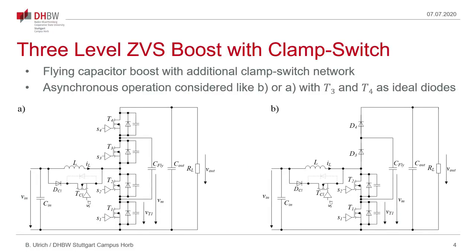The converter considered here is shown on this slide in two versions. On the left side we have a flying capacitor converter with four active switches and on the right side we have a converter where the two upper switches are replaced by diodes. For the presentation here we consider the operating mode like this converter on the right side which will be denoted as an asynchronous version and on the left side we have the converter operating in a synchronous version.